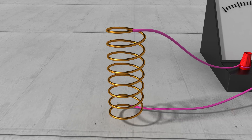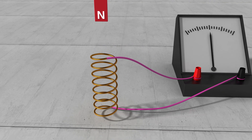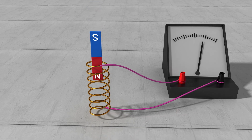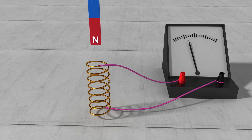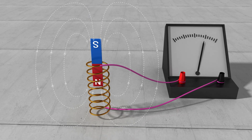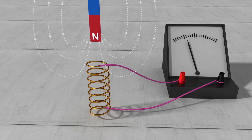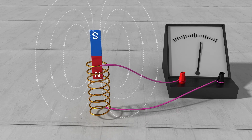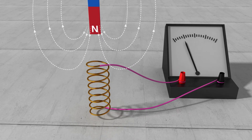Here is a coil. If you move a magnet around the coil, an electric current will flow. The current generated by the change in the magnetic field around the coil is called induced current.